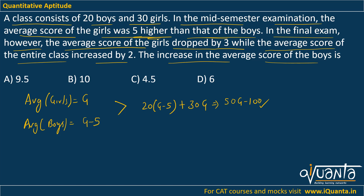Now somewhere in the question we are also talking about the average score of the entire class. So this is the total marks of the whole class — what will be the average of the whole class? Since we have 50 students, (50g-100) divided by 50 will be the average of the entire class during the mid-semester examination. This will be equal to g-2.